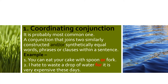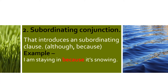A coordinating conjunction joins two similarly constructed and syntactically equal words, phrases, or clauses within a sentence. For example: 'You can eat your cake with a spoon or fork.' Another example: 'I hate to waste a drop of water, or it is very expensive these days.'